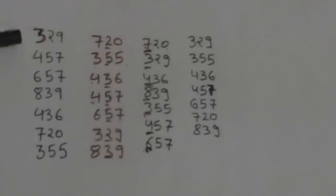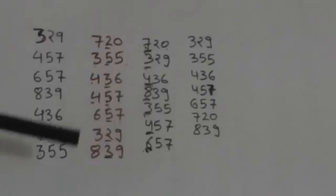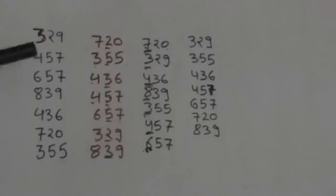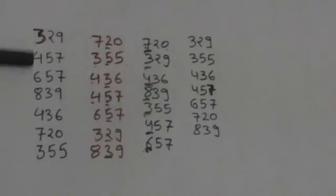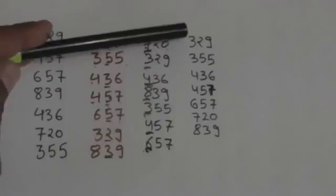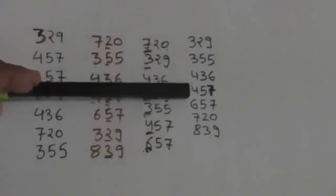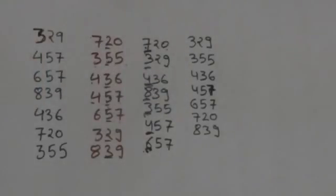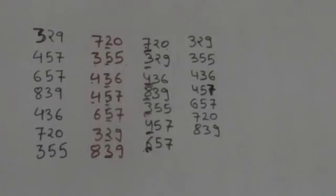Now, here they were 3-digit numbers, so we have repeated this procedure 3 times. After repeating this procedure 3 times, we will get all the numbers of the list arranged in increasing order. These numbers are now arranged in increasing order. So in this way we can sort d-digit numbers by using radix sort algorithm. Thank you.